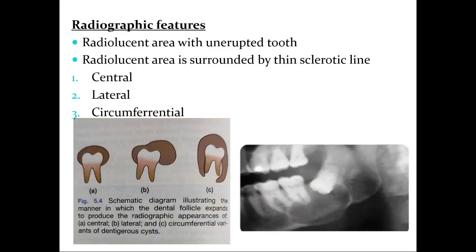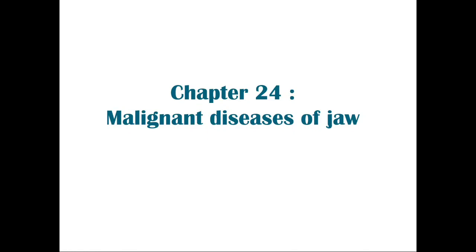Root resorption of adjacent teeth may also be seen. Radiologically, there are three types: central, lateral, and circumferential. The central type engulfs the crown portion; the circumferential type encloses the whole crown; and the lateral type is found lateral to the tooth itself. It appears as a radiolucent area associated with the unerupted or impacted tooth.